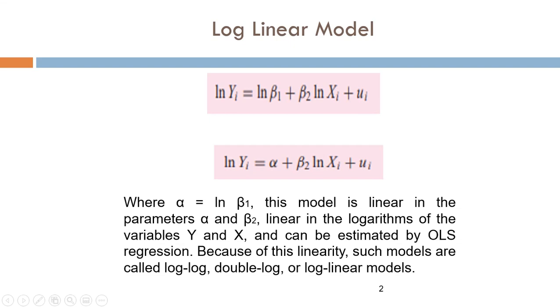Let's understand the log-linear model with these equations. The first one says: natural log Yi equals natural log β1 plus β2 natural log Xi plus error term i. Similarly, the second equation says: natural log Yi equals α plus β2 natural log Xi plus error term.